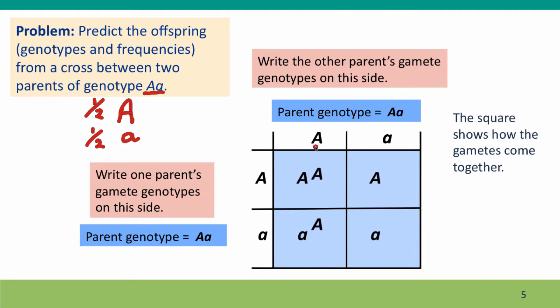And we see the genotypes of the offspring represented simply by filling in the squares with the gamete genotypes. So we have big A, big A genotypes, little a, little a genotypes, and two squares of heterozygous genotypes.